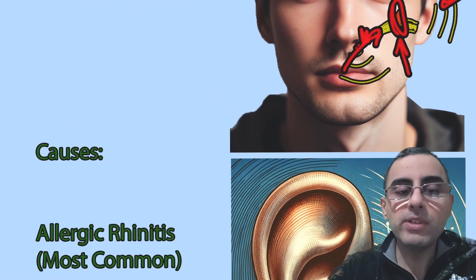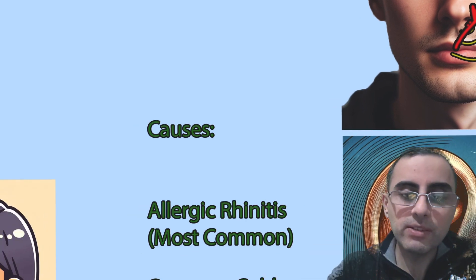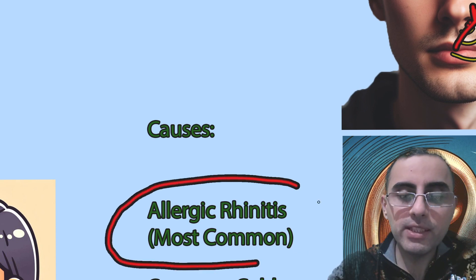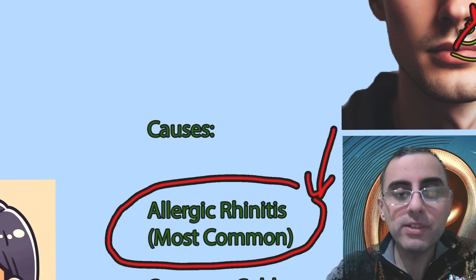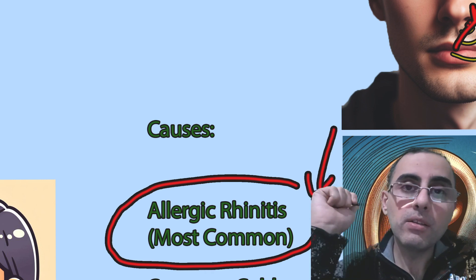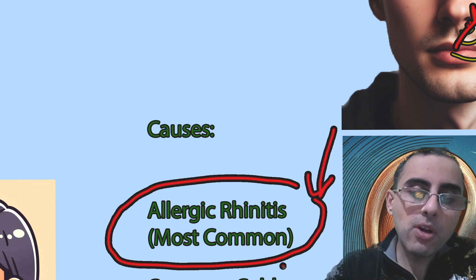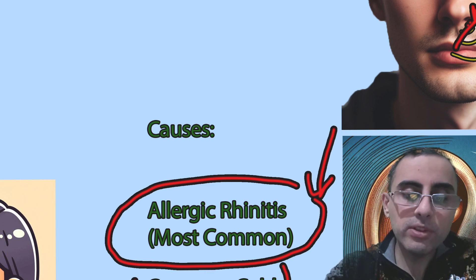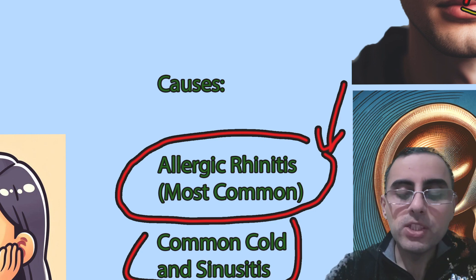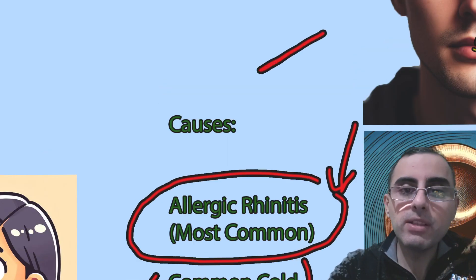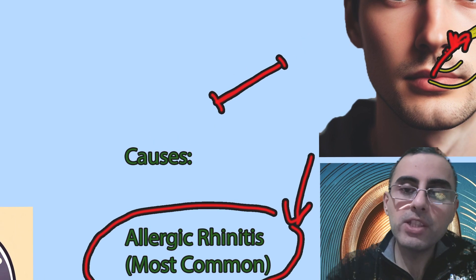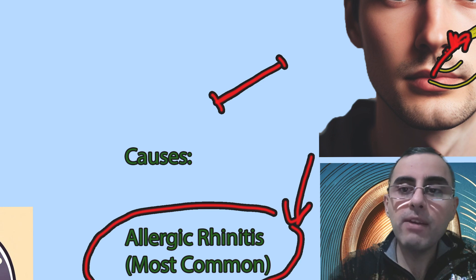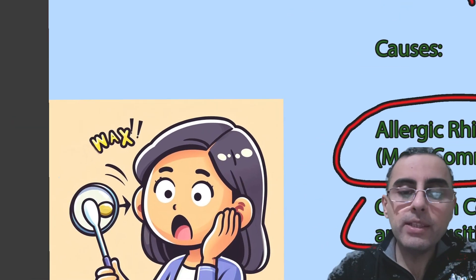The most common causes of Eustachian tube dysfunction: first and most common is allergic rhinitis — Eustachian tube dysfunction is a very common manifestation of allergic rhinitis, and people with seasonal allergies frequently complain of fullness in their ears. Common cold and sinusitis are also common causes. Anatomical variations also play a role — for example, children have a shorter Eustachian tube, so infection and inflammation occur much more easily, which is why children with a cold or flu frequently also have ear pain.